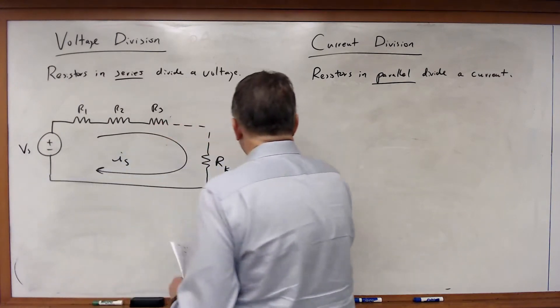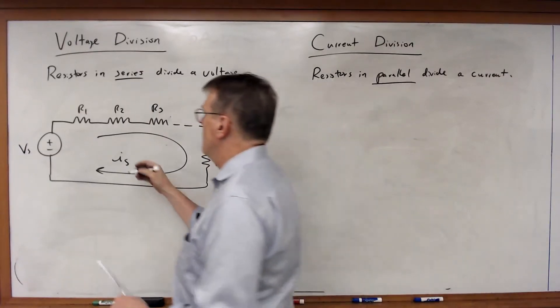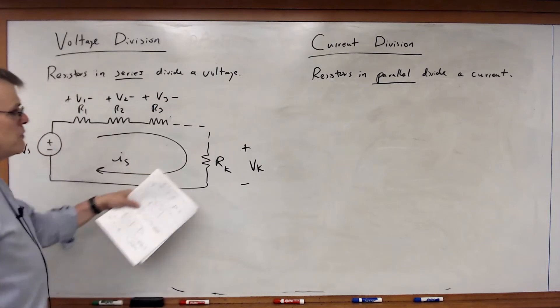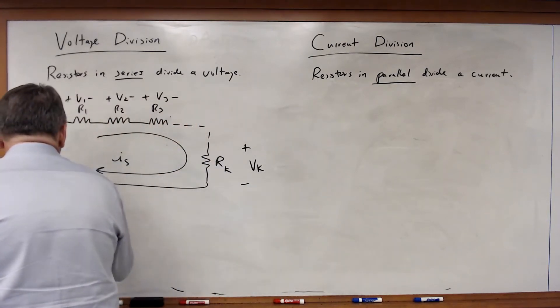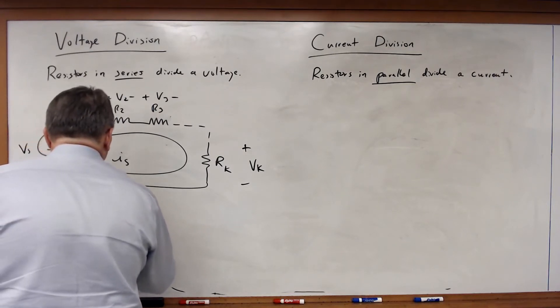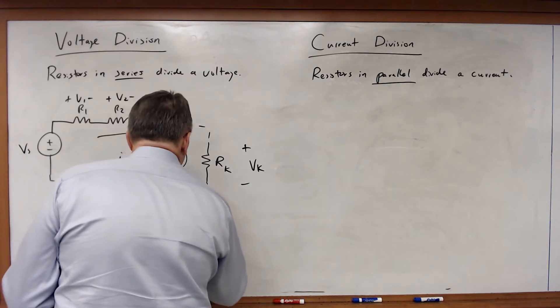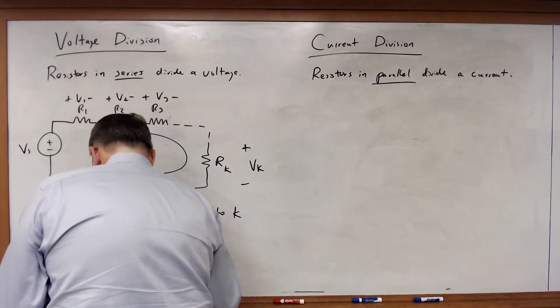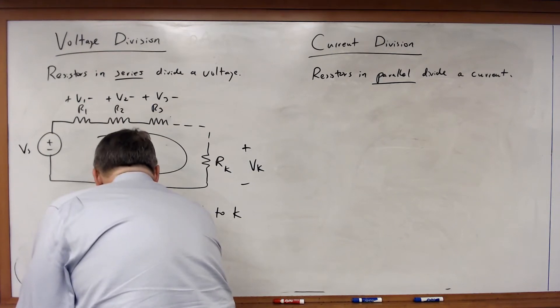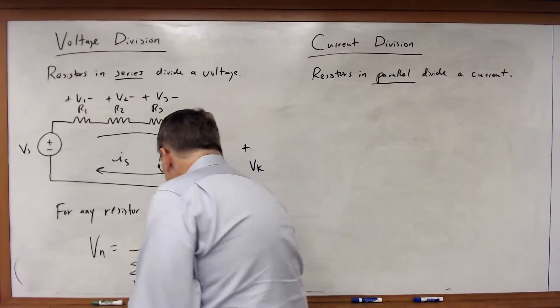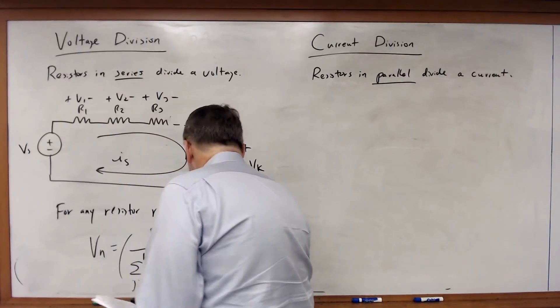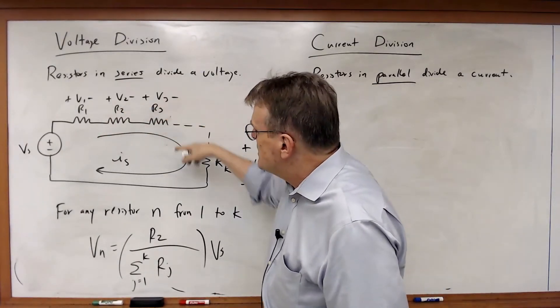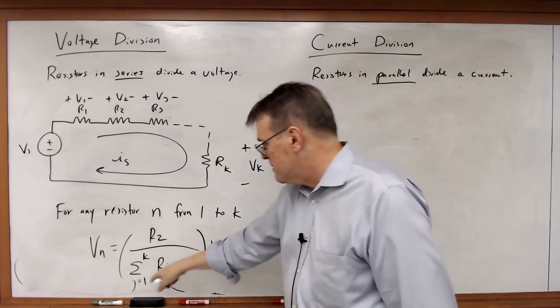Then I can prove that for any voltage V1 or V2 or V3 all the way to V sub K, for any resistor from 1 to K, that V sub N is equal to R sub N over the sum of all the other resistors—the sum from J equal 1 to K of R sub J—and then multiplied times V sub S. In any case, if I want to pick any voltage in that string, it's the resistance divided by the sum of all the resistors.